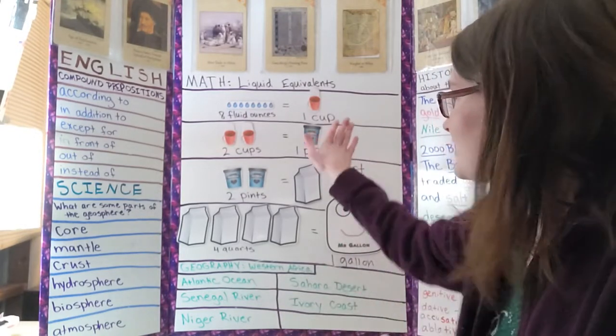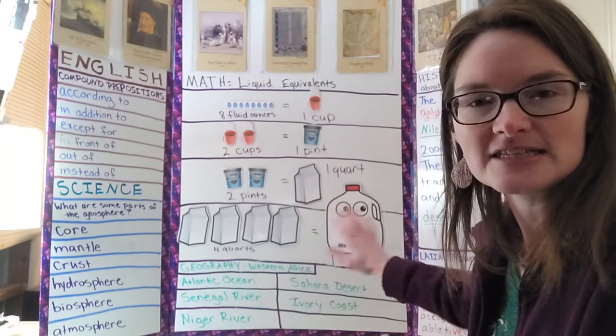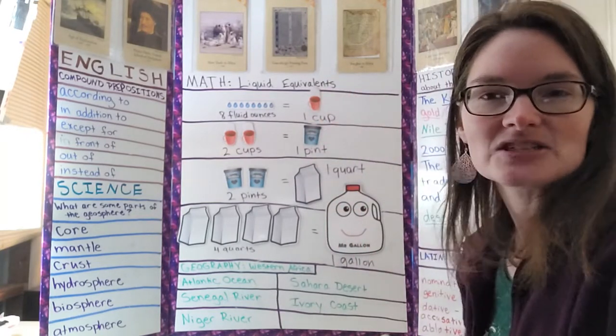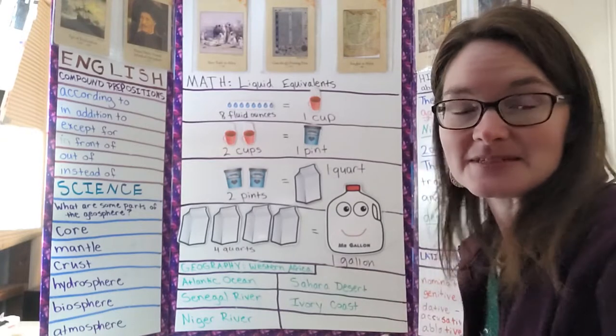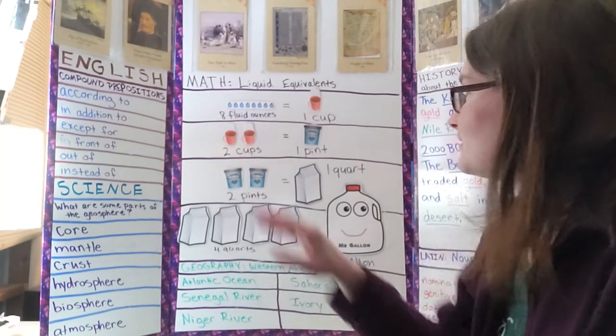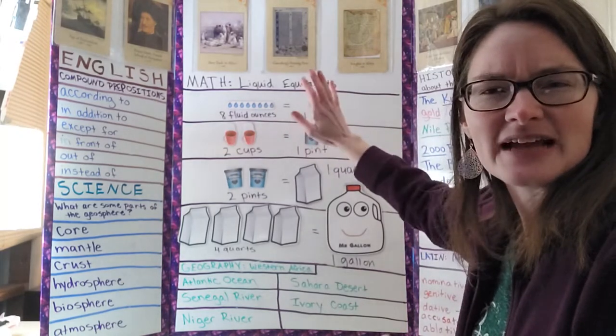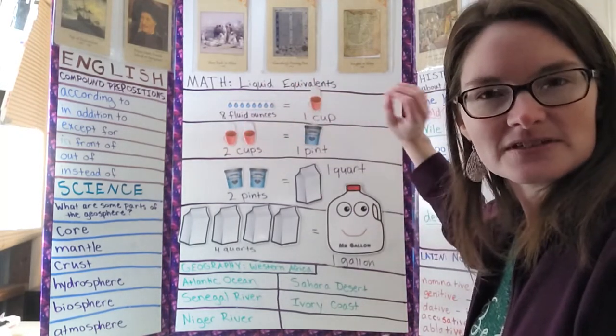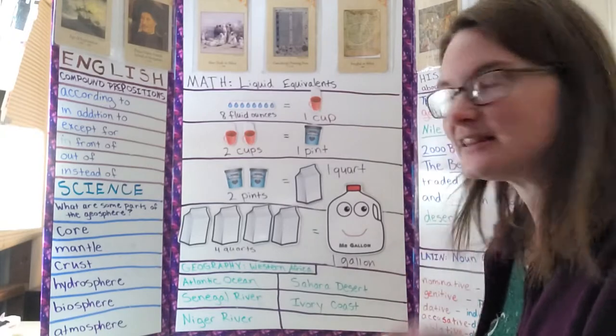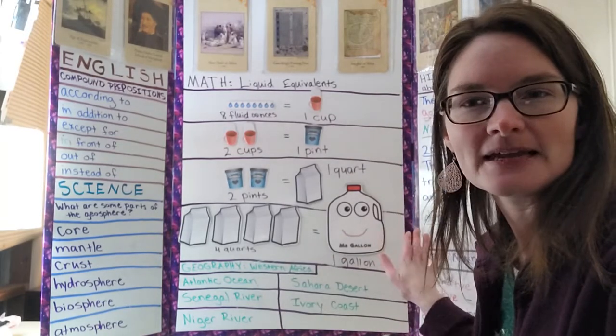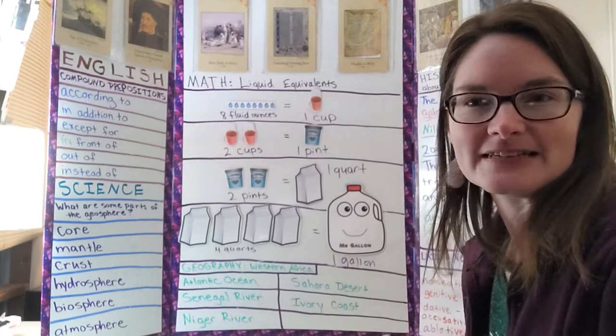Then I erased this side of the equation and took down these parts. I had them tell me what it equals. So I would have, you know, the one cup erased and I would take the cup down, so you'd have to tell me eight fluid ounces equals one cup, and I'd stick the cup back up there. So I just had them help me match up the liquid equivalents. That was fun.